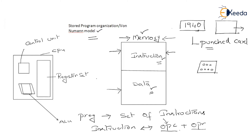Both instructions and data are fetched every time an instruction gets executed. Looking at the register set — this is the CPU. In the CPU, we have three components: one is the control unit, one more is the ALU, and the third is the register set. The control unit synchronizes the activities, the ALU performs arithmetic or logical operations one at a time, and the register set provides storage for the currently executing instruction.